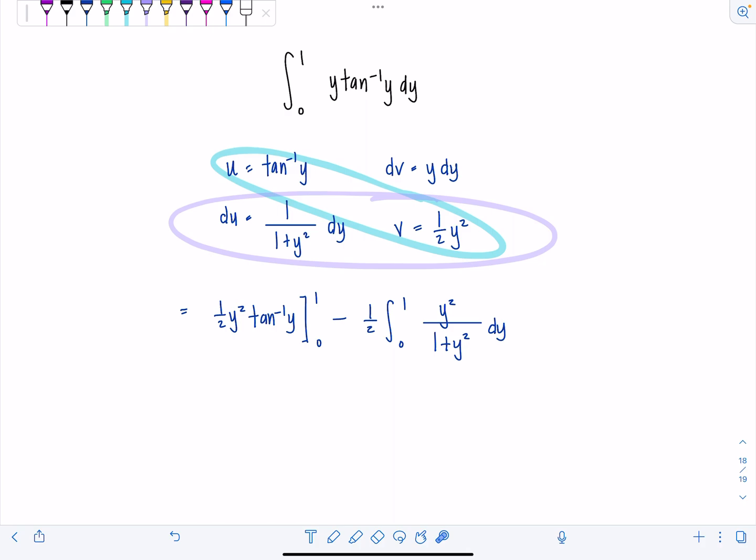Now how to tackle this integral. You could utilize long division, notice we have a rational expression, degree of the numerator is the same as the degree of the denominator, and you don't start thinking about partial fractions or anything until the degree in the denominator is higher. But we don't even really need to long divide. I'll show you a little shortcut you can do. So I'm simply going to add 1 and subtract 1 in the numerator.